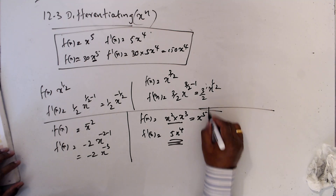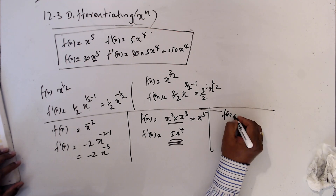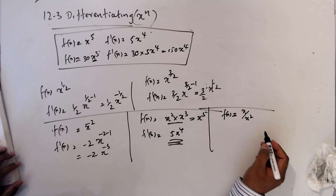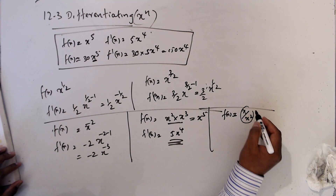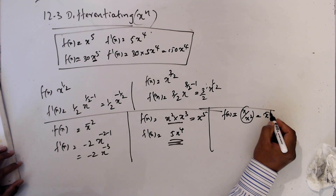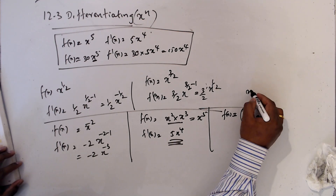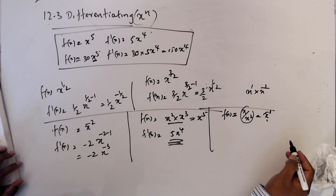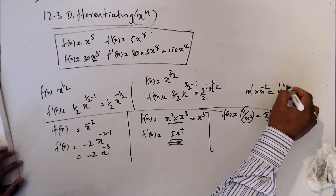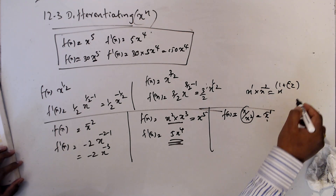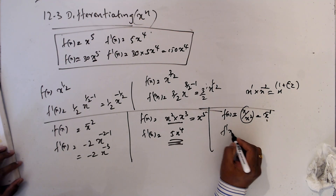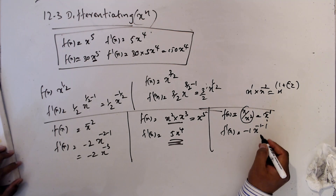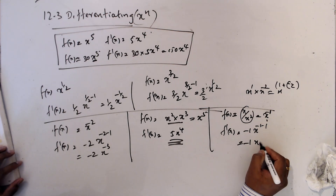Likewise, if f(x) = x divided by x², this is also not yet in differentiation form. Simplify first: x¹ · x⁻² = x⁻¹ (since 1 plus minus 2 equals minus 1). Then f'(x) = minus 1·x^(−1 − 1) = minus 1·x⁻².